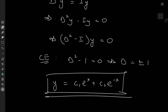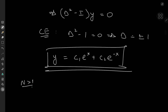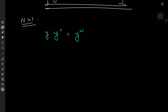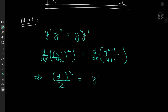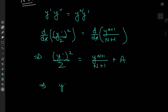Now for cases of n greater than 1, let's multiply both sides by y prime. The left hand side and right hand side both then look like derivatives, giving the derivative with respect to x of y prime squared times one half equal to the derivative with respect to x of y to the n plus 1 divided by n plus 1. Integrating both sides, we get y prime squared over 2 equal to y to the n plus 1 divided by n plus 1, plus a constant of integration a.